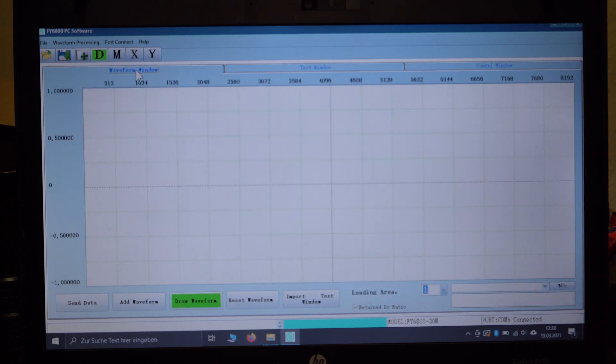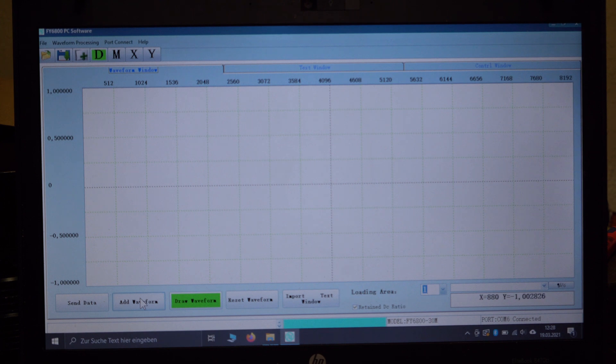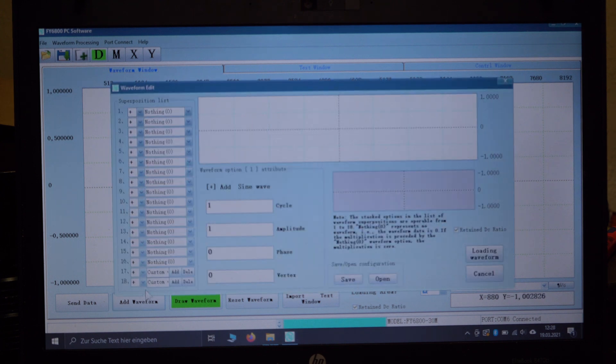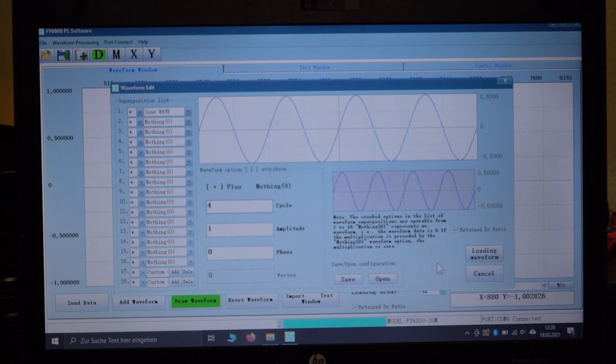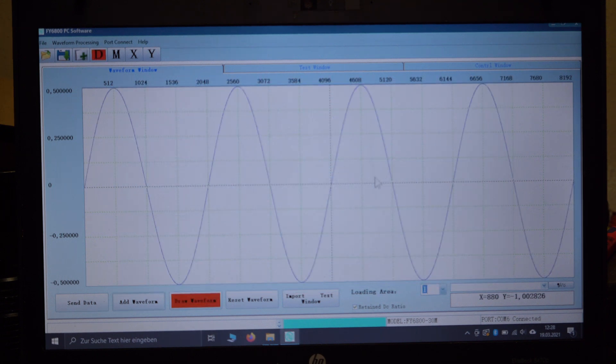Now let's go to the waveform window and we can add new waveforms. Click on add waveform, let's select the first waveform - should be a sine wave with four cycles and that's it. Load waveform, there we go, loading area. Let's say we go into three, that's arbitrary three, yes send data.